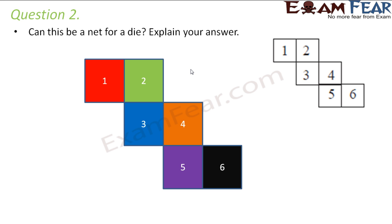In order for this net to work, the first criteria that this net has to fulfill is it should be able to form a cube, because the shape of the die is like a cube. The first requirement is there should be six surfaces, each surface being a square. Here we actually have six squares, so that criteria is satisfied.